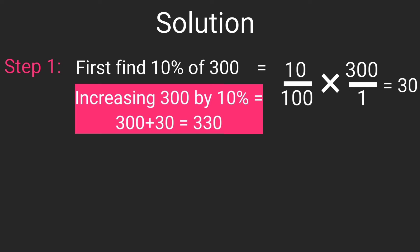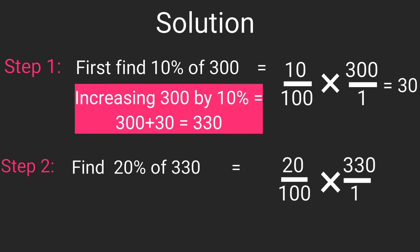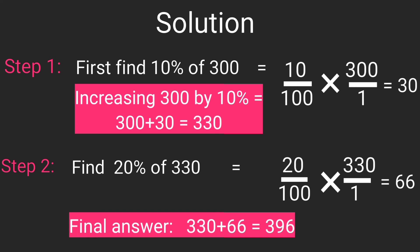Now step 2, we're going to find 20% of 330. To do that, we say 20 divided by 100, multiply by 330 divided by 1. Solving this out, we get 66 as the answer. Now to get the final answer, we say 330 plus 66, which gives you 396. Final answer.